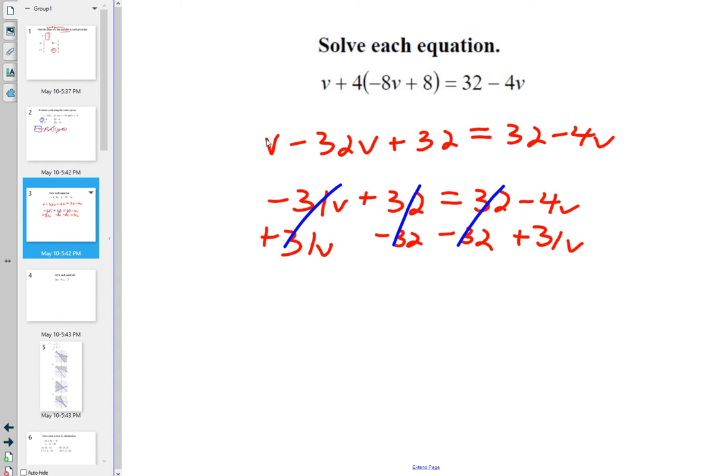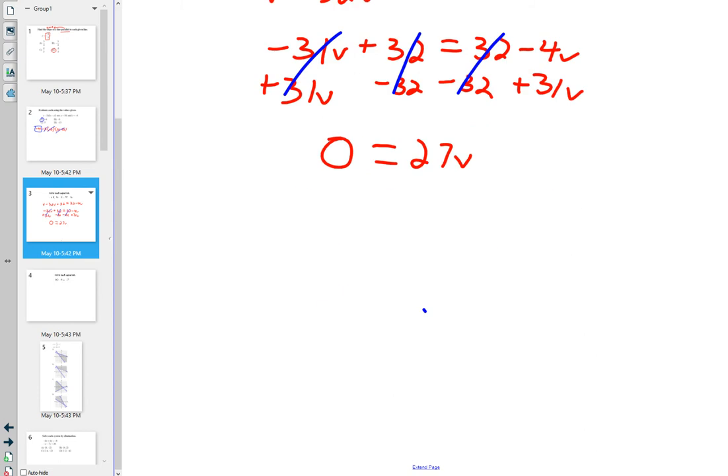If everything cancels out on the left side, nothing is left here. Now, on the right side, that would be 27v. Now, sadly, some people when they see this, they're like, oh yeah, no solution. No, there's no solution. We would just go ahead and divide by 27. But what's 0 divided by anything? So the solution I get is 0 equals v, but on the Google Forms I would just put 0.